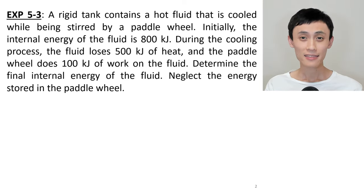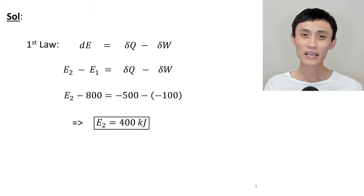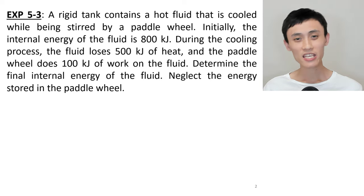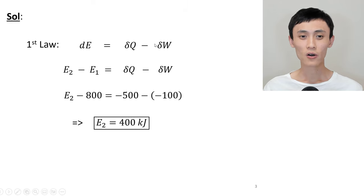Let's take a look at the answer. We start off with the first law. DE equals DQ minus DW. E is energy. It's E2 minus E1 equals DQ minus DW. It says originally the internal energy is 800 kJ. So 800 is over here.